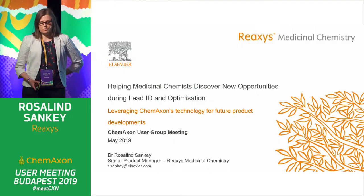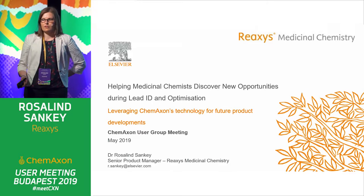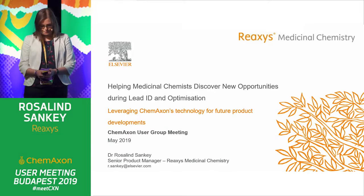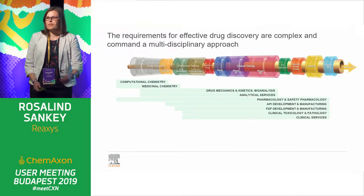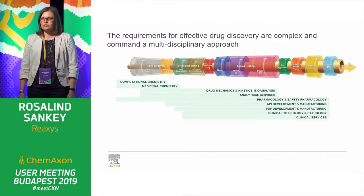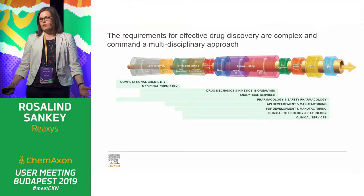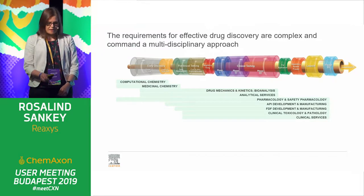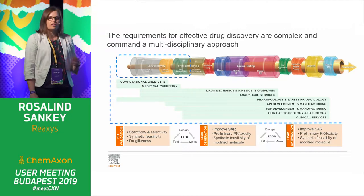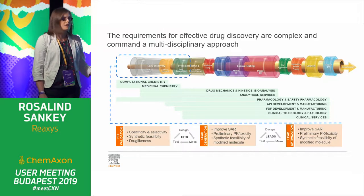Today I'm going to talk about some of the future projects we're working on at Elsevier, particularly within Reaxis, and how we're using ChemAxon technology to do that. Within Reaxis and the life science solutions at Elsevier, we're working very much in drug development. Particularly with Reaxis, we're focused on the early stage of drug development — taking compounds from hit validation, lead generation, through to lead optimization.